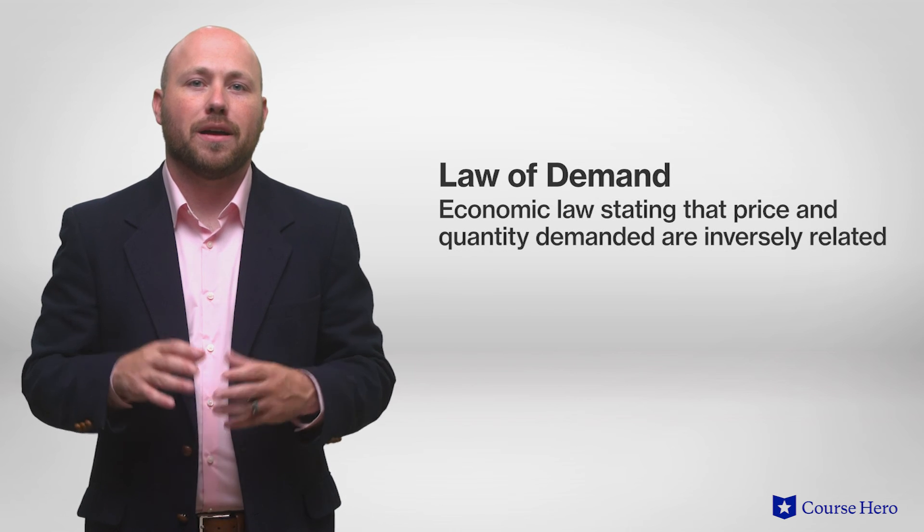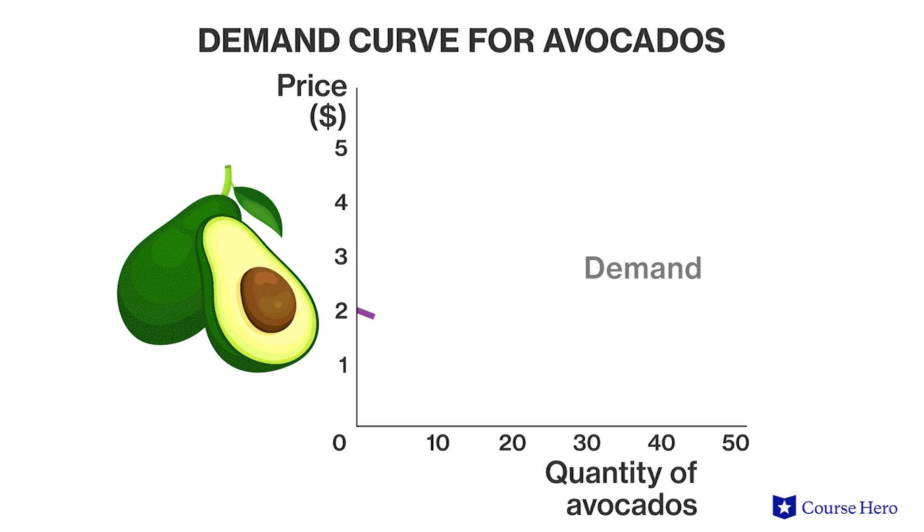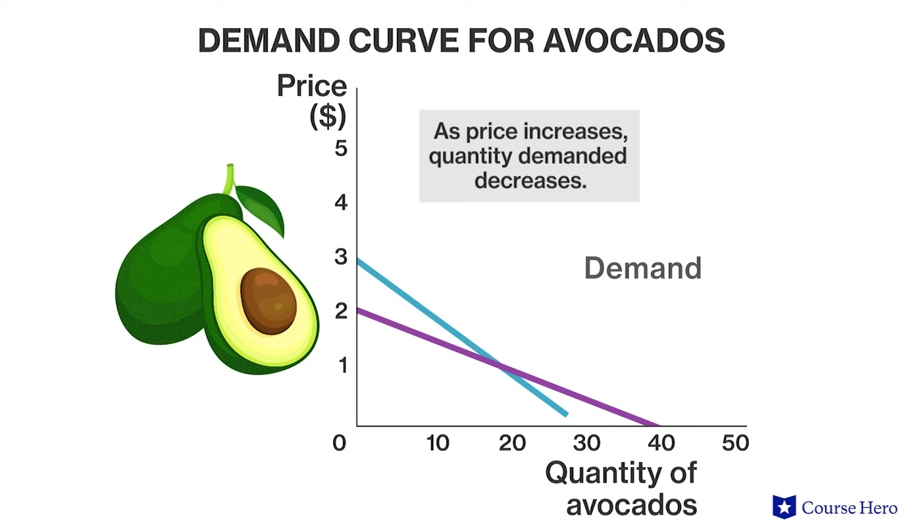The law of demand is an economic law stating that price and quantity demanded are inversely related to one another. As the price of something decreases, the quantity demanded by consumers will increase, all other things being equal. Graphically, this is why the demand curve slopes downward. If the price of an avocado increases from $2 to $3, the quantity demanded will decrease. Consumers may not be willing or able to buy as much when prices rise. Consumers prioritize goods differently — someone who is an enthusiastic collector of artwork or antique cars will be prepared to buy several pieces at higher prices, while another consumer might only require a single piece for occasional use. When prices fall, consumers who attach less importance to a good may be tempted to consider buying it at the new lower prices. For many goods, price increases are a form of rationing, and thus only consumers who have a strong desire for that product will purchase it.